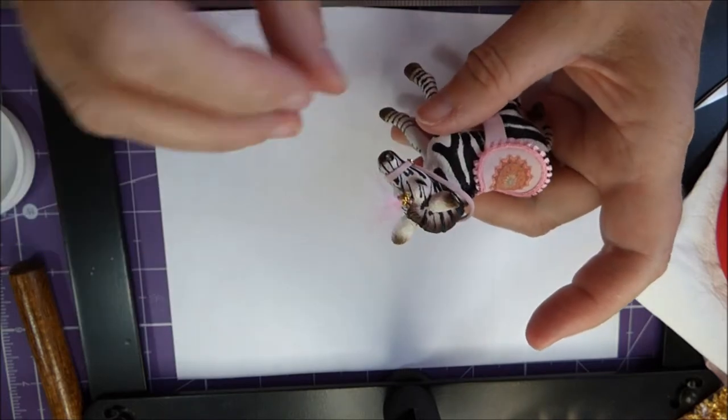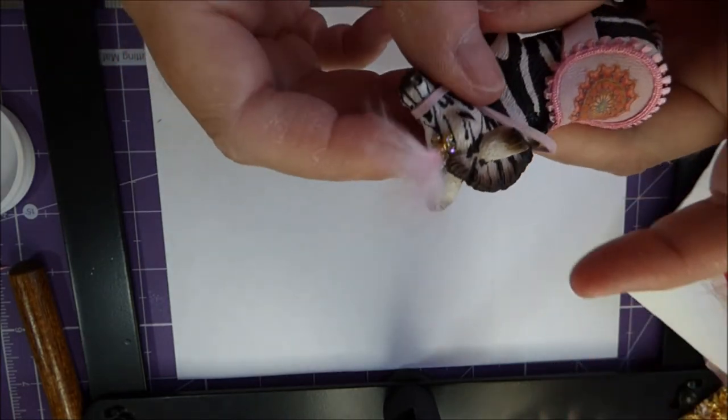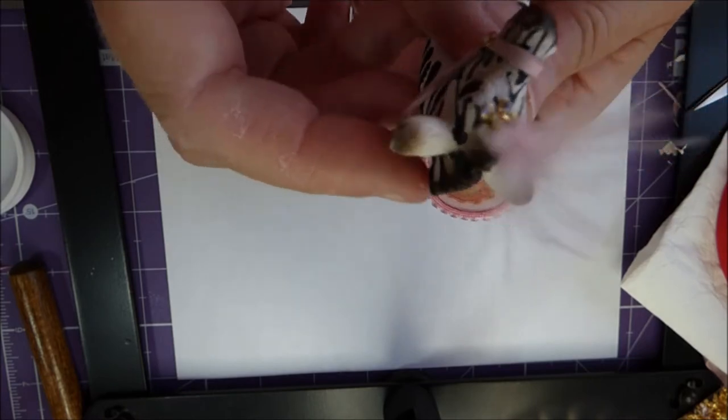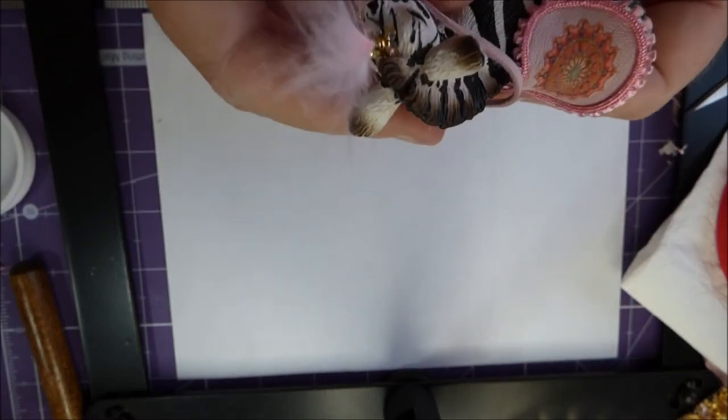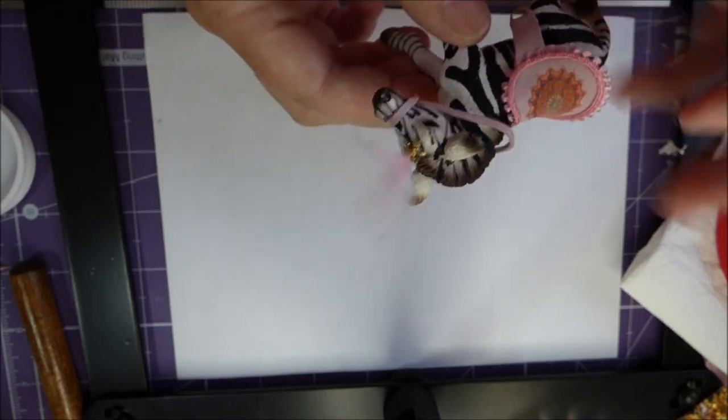Then you can glue the feathered headdress, jeweled headdress onto the top of the nose, just below the ears, below the front of the mane. Glue it on centrally and leave it to dry.